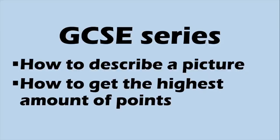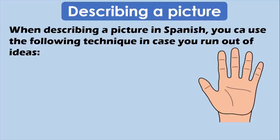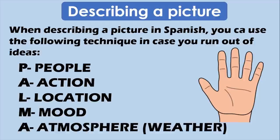This is the GCSE series — how to describe a picture and how to get the highest amount of points when you are describing a picture in your writing test. In order to describe a picture, you might have plenty of ideas, but for some people you might be a bit excited about your exam. When describing a picture in Spanish, you can use the following technique in case you run out of ideas. I've got a palm on the right-hand side of the screen because we can make reference to people, actions, location, mood, and atmosphere. This is an acronym creating the word PALMA, which in Spanish translates to palm. We are going to see what we could put for each part of these words.